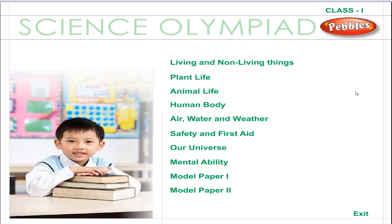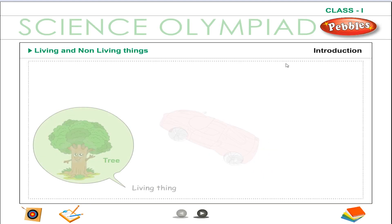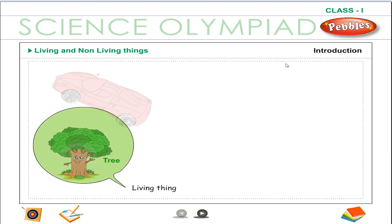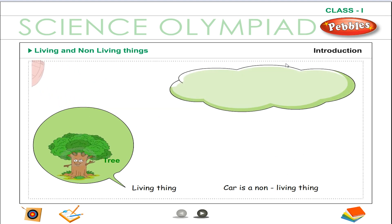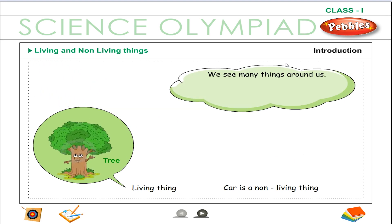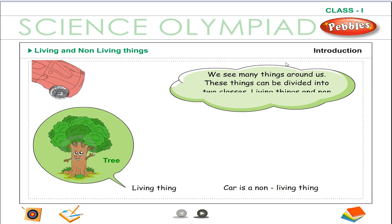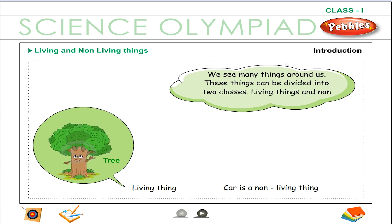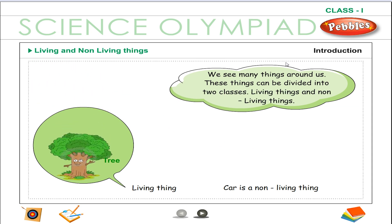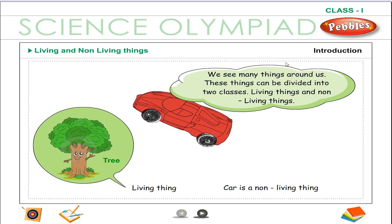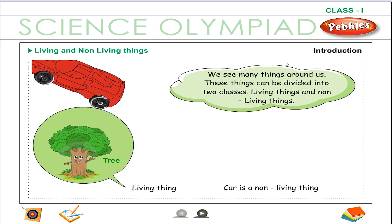Science Olympiad, Class 1. Living and Non-Living Things. We see many things around us. These things can be divided into two classes: Living Things and Non-Living Things.